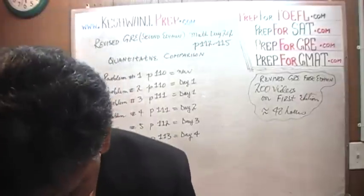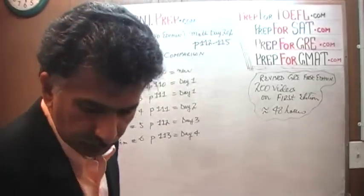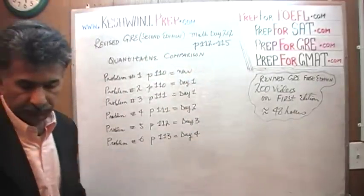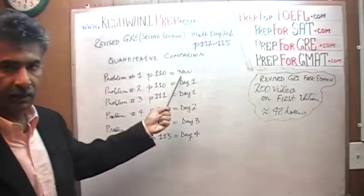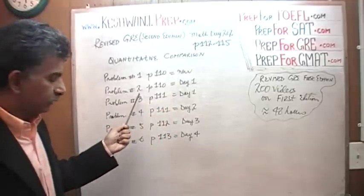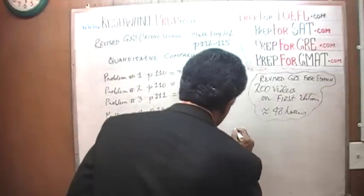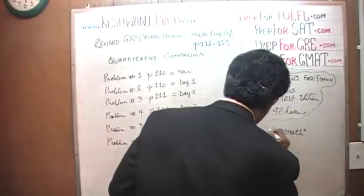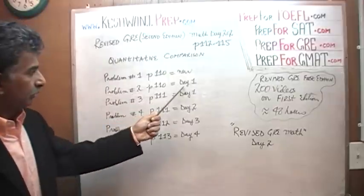Let's turn to page 110 — that's where the story begins. The very first math problem appears on page 110. Yesterday, on day 201, we solved problem number 1, which is a new problem that did not appear in the first edition. For problem number 2 on page 110, if you want to watch the solution, just type in the tag 'Revise GRE Math' and then whatever day you need — day 1 or day 2. Problem number 2 was covered on day 1.